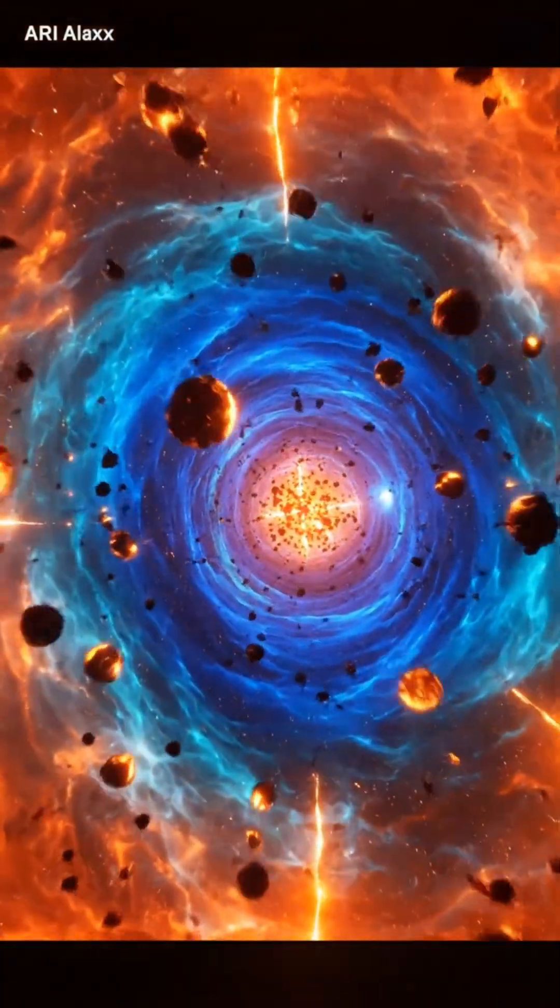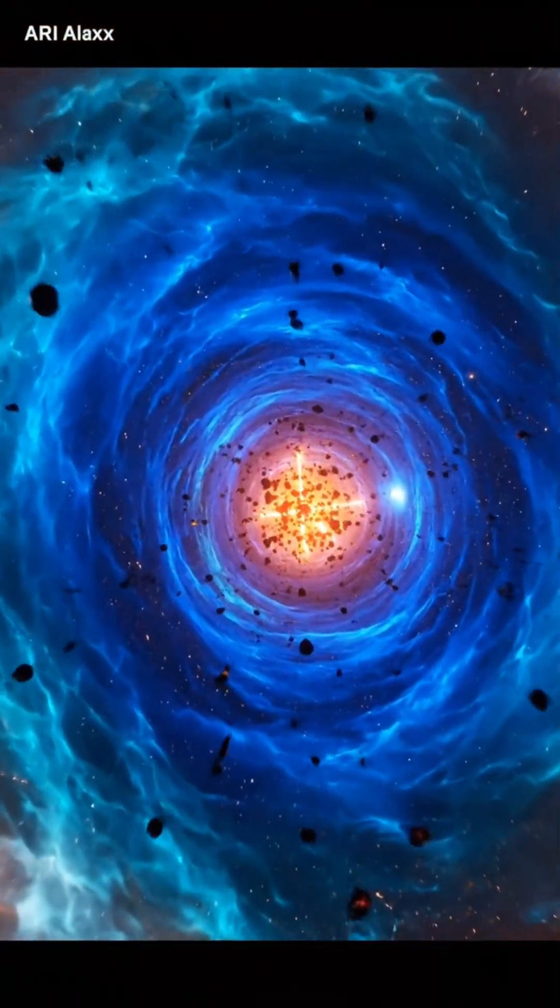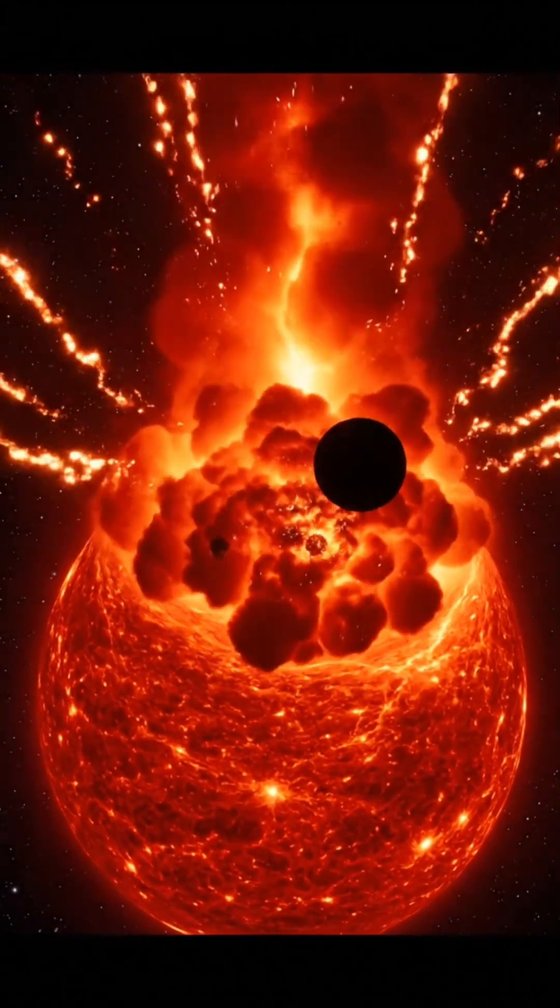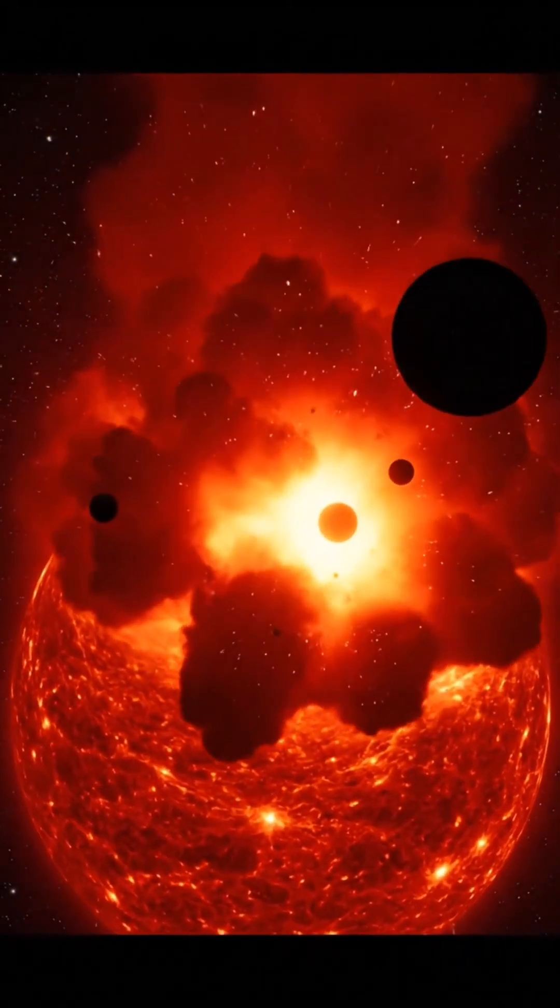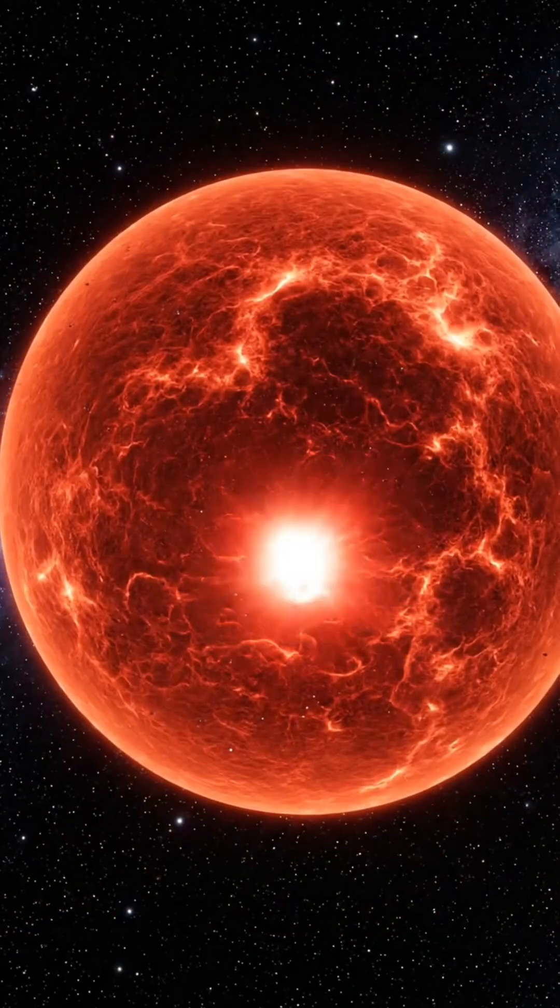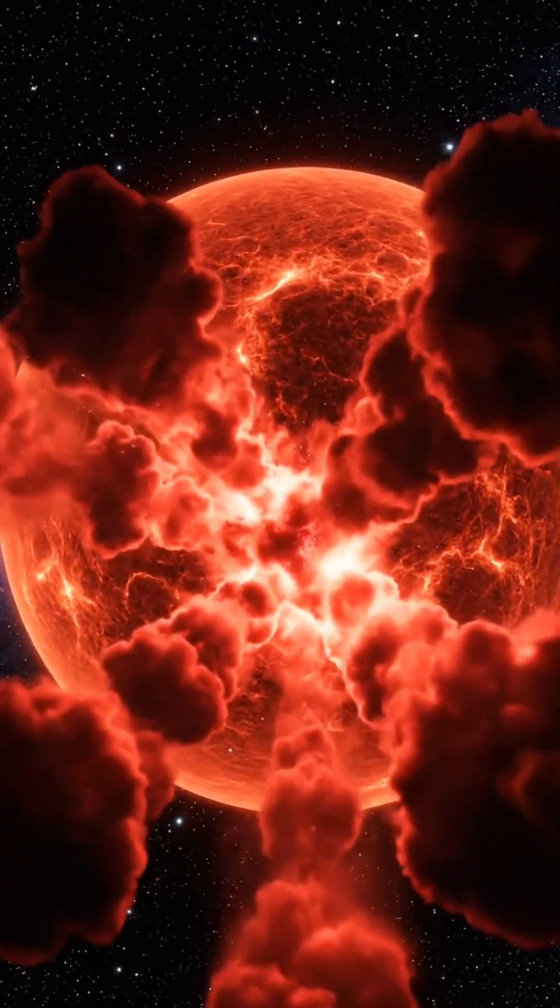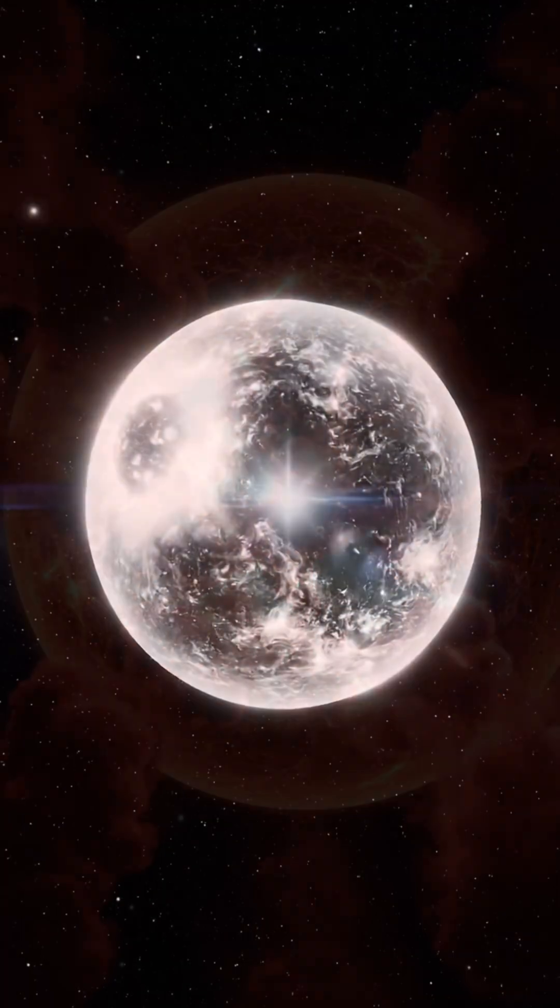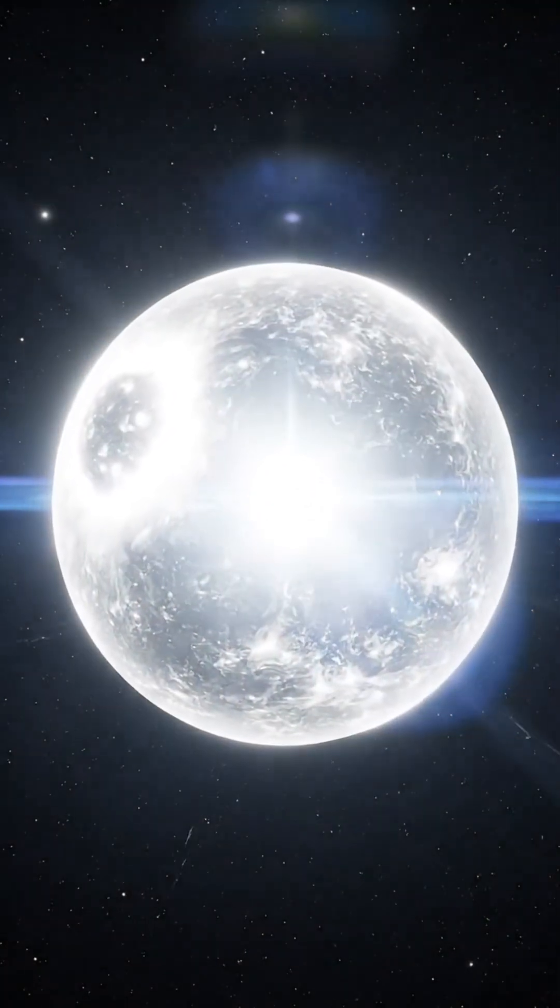Once its core hydrogen is depleted, the Sun will bloat dramatically into a red giant, expanding far enough to engulf Mercury and Venus, and perhaps even Earth. It will then collapse, shedding its outer layers to become a white dwarf, a stellar remnant the size of Earth, but immensely dense.